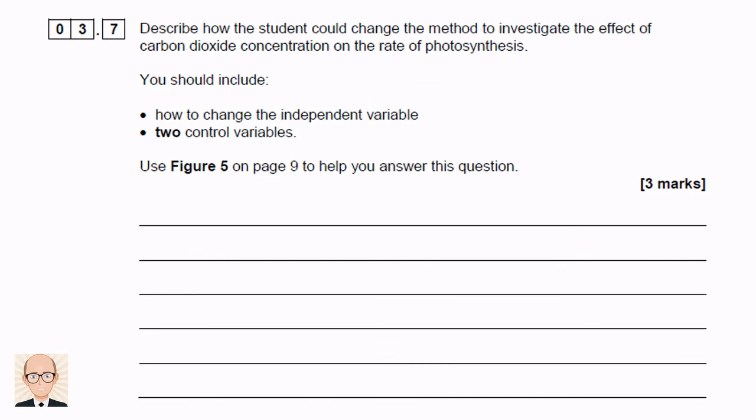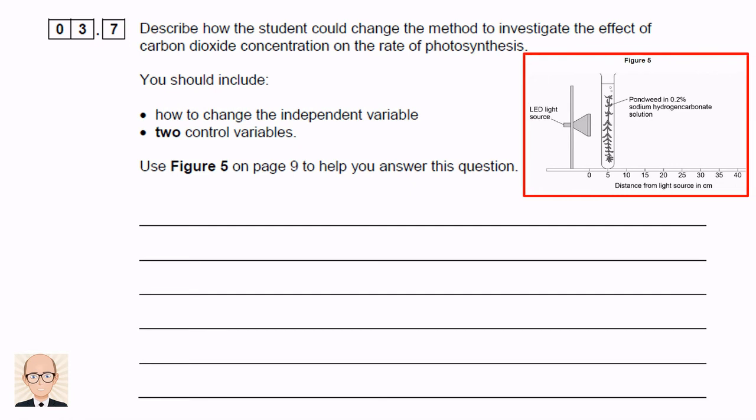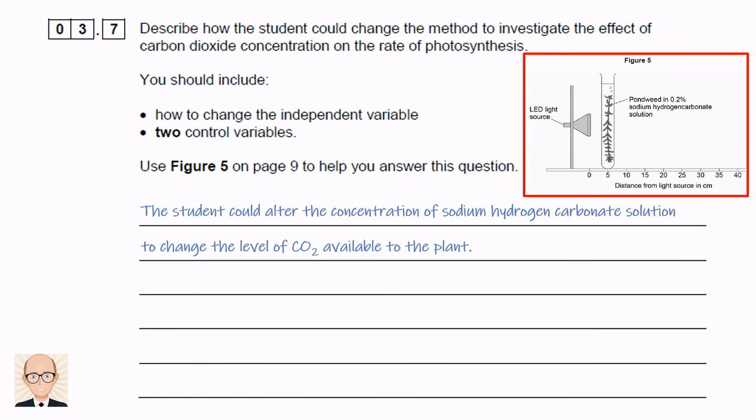Lastly, we are asked to describe how the investigation might be changed to study the effect of carbon dioxide concentration on the rate of photosynthesis. We need to say how we would change the independent variable, and identify two controlled variables. So let's put Figure 5 back up to help us with the answer. Instead of adjusting the distance from the light source, we would need to alter the concentration of sodium hydrogen carbonate solution in order to change the concentration of carbon dioxide available to the plant. This is the independent variable that we need to describe.